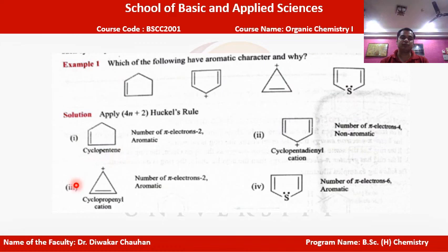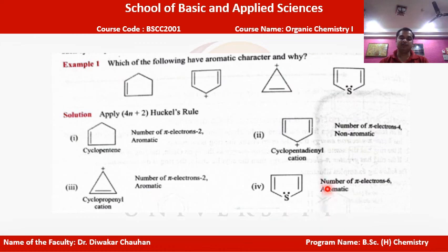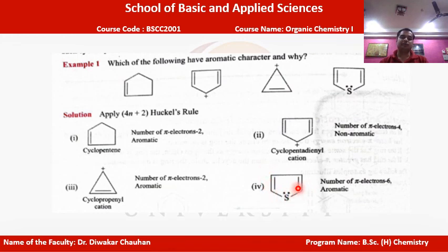Thiophene has two pi bonds giving four pi electrons, and the sulfur atom contributes a lone pair (two electrons) that participates in delocalization alongside the p orbitals at the ring corners. The total six pi electrons satisfy the 4n+2 rule (n=1). Since thiophene is cyclic with a continuous pi electron cloud and follows Hückel's rule, it is also aromatic in nature.